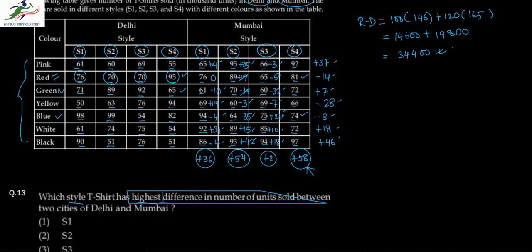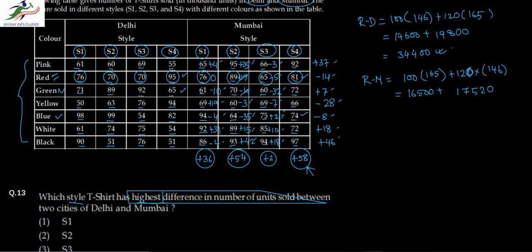For Red Mumbai: 100 multiplied by the sum of S1 and S2, which is 76 plus 89 equals 165, plus 120 multiplied by the sum of S3 and S4, which is 146. That gives 16,500 plus 17,520, totaling 34,020 for Red Mumbai.